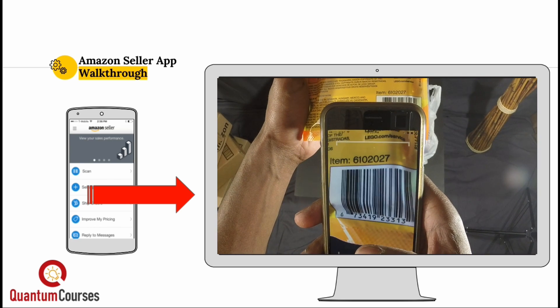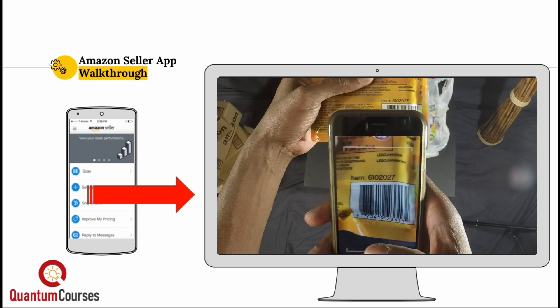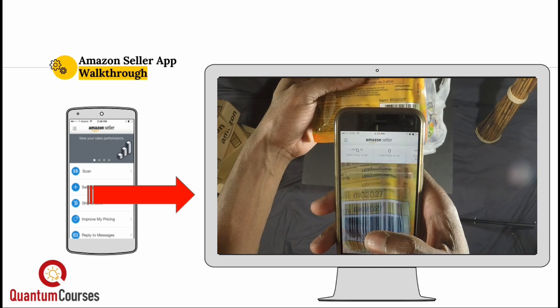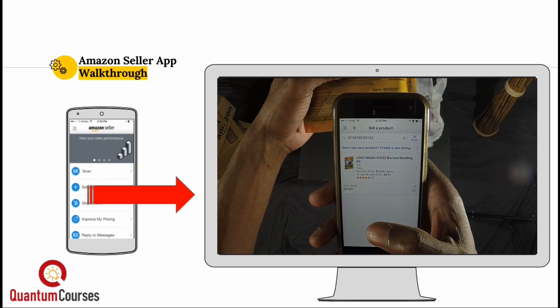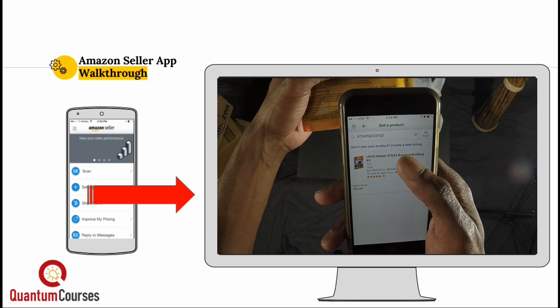Sometimes the app may have trouble scanning if the barcode is wrinkled or reflecting light. There we go. The app will automatically load the results from Amazon once the barcode is scanned.